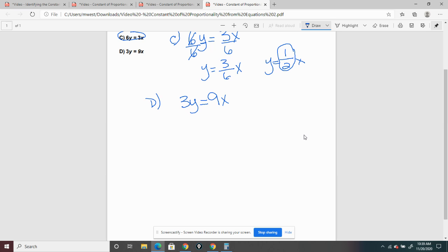D says that we have 3y equals 9x. And here we're wanting to isolate the y, so we're going to divide by 3. What you do to one side, you do to the other. 3 divided by 3 is 1, so that cancels out.